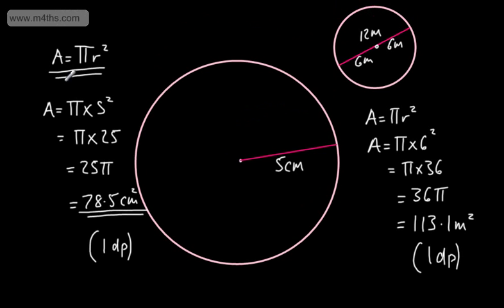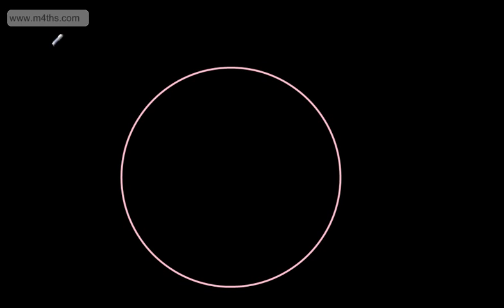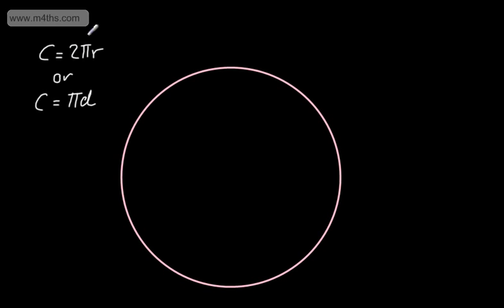That is the area of the circle — the space trapped inside. Let's now look at the circumference of the circle. As we saw before, the circumference is the distance around the outside. There are two ways to write this: the circumference C equals 2πr, that's 2 times pi times the radius, or we can say the circumference is πd, pi multiplied by the diameter. This works because the diameter is two radii.